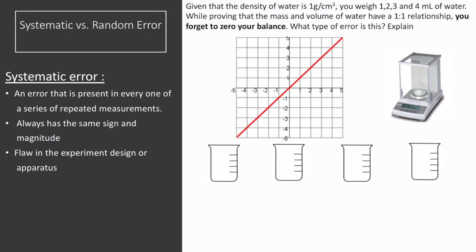The next topic is systematic versus random errors. Systematic errors are present in every one of a series of repeated measurements. They are always the same sign and magnitude — they are constant, hence the name systematic. They can be caused by flaws in the experiment design or apparatus. Examples include heat loss in a calorimetry measurement, because you use the same cup every time and the cup is not a perfect insulator, so you will have some heat loss in every measurement. A second example is losing gas due to a leak.